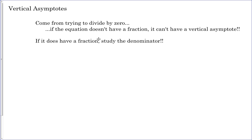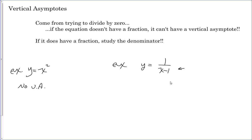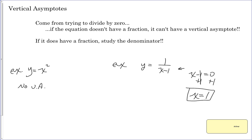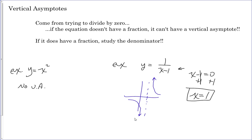For example, y = x² has no fraction, so no vertical asymptotes. For y = 1/(x − 1), we have a fraction, so study the denominator: set x − 1 = 0 and solve, giving x = 1 as our vertical asymptote. Draw the graph with a vertical dotted line at x = 1. Since the exponent is odd, the two sides face opposite directions.